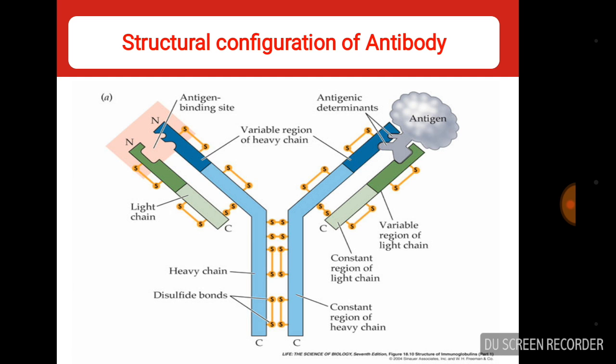The Fc region is responsible for communicating with other components of the immune system. About 100 amino acids at the amino-terminal ends of both light and heavy chains constitute their variable region, denoted as variable light (VL) and variable heavy (VH) chain regions.